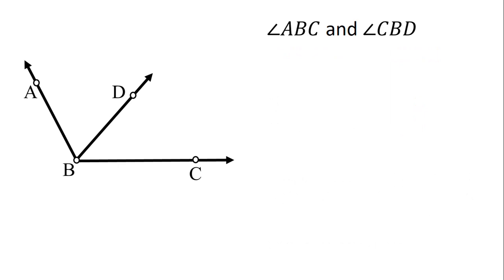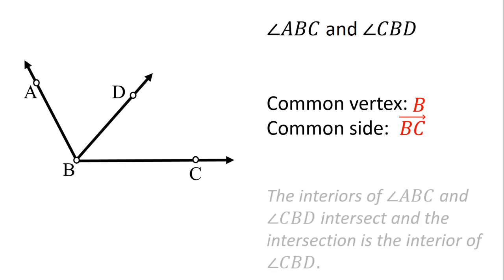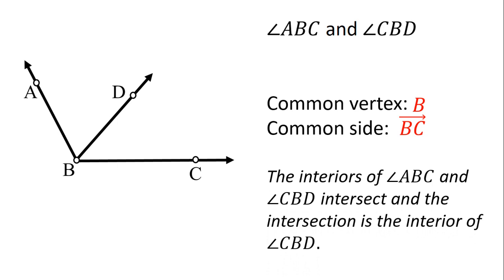How about this? Angle ABC and angle CBD. Okay, so anong common vertex nila? Common vertex nila is B. How about common side? Ang common side nila is RayBC. E paano naman yung interiors? Yung interiors nila ay nag-intersect. At yun ay yung interiors ng CBD. So yung angle CBD ay nasa loob ng angle ABC. So hindi sila Adjacent Angles.